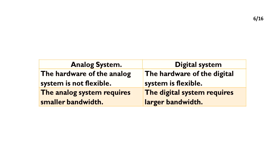The hardware of the analog system is not flexible. The hardware of the digital system is flexible. The analog system requires smaller bandwidth. The digital system requires larger bandwidth.